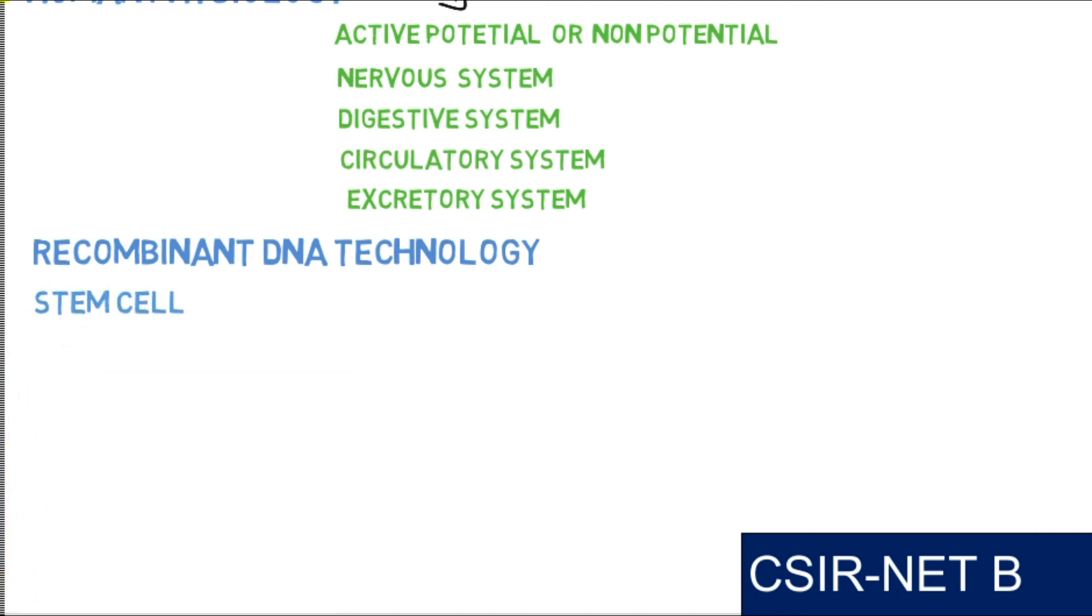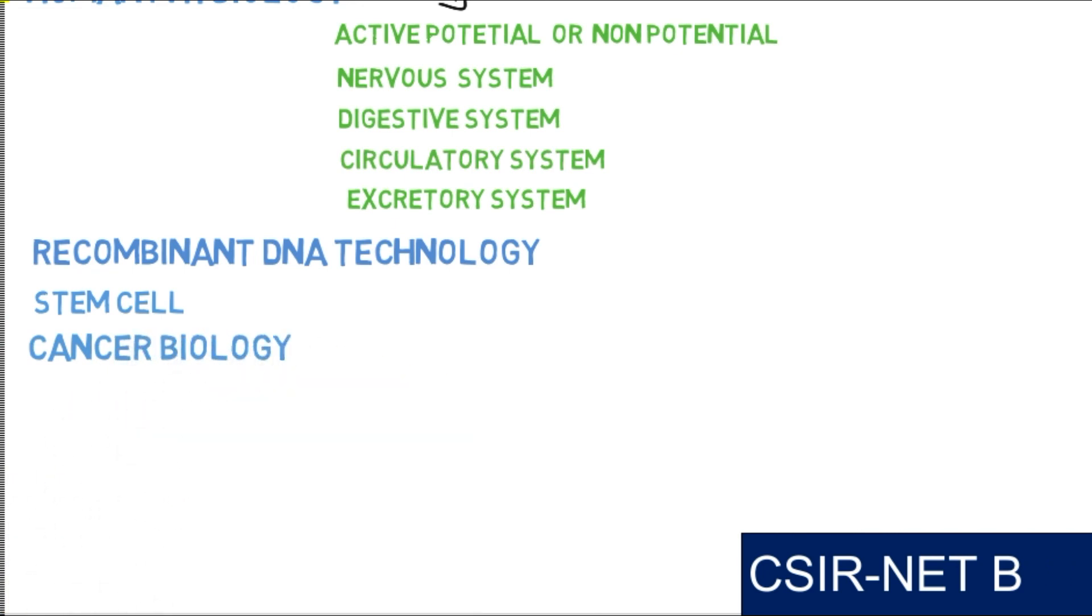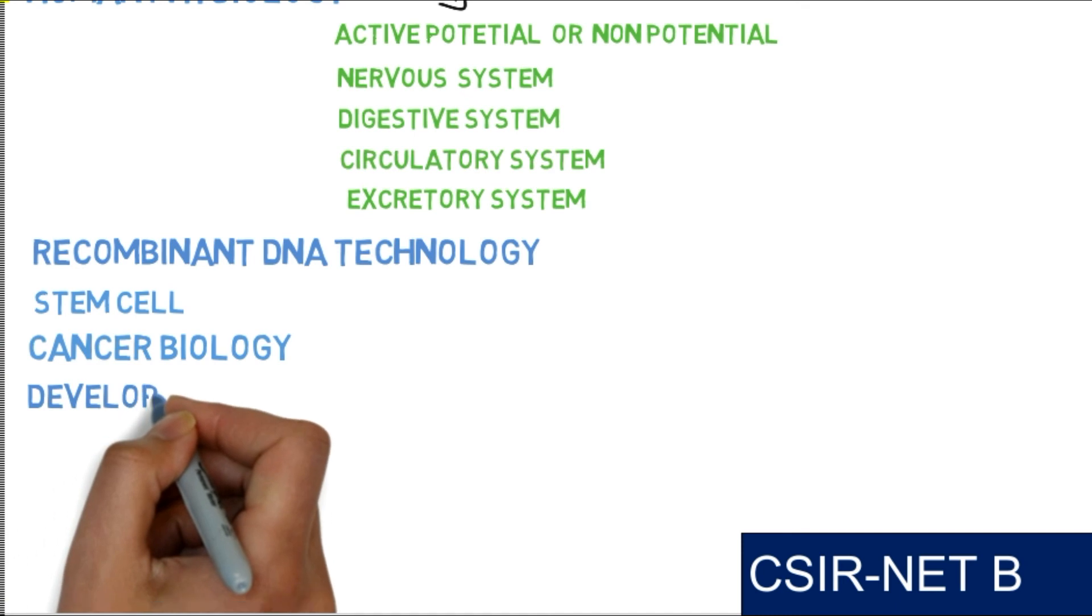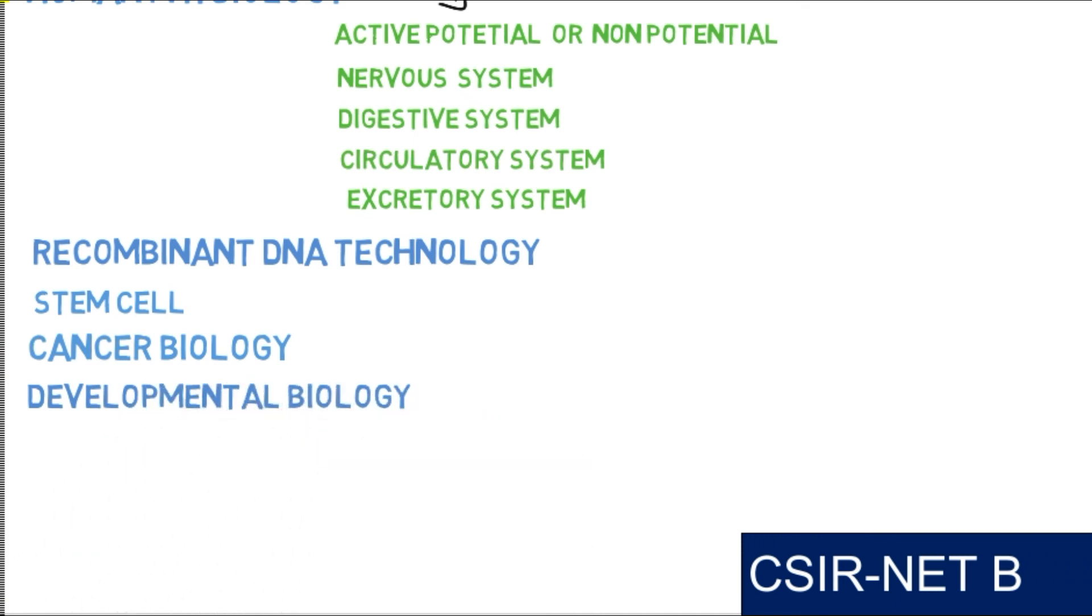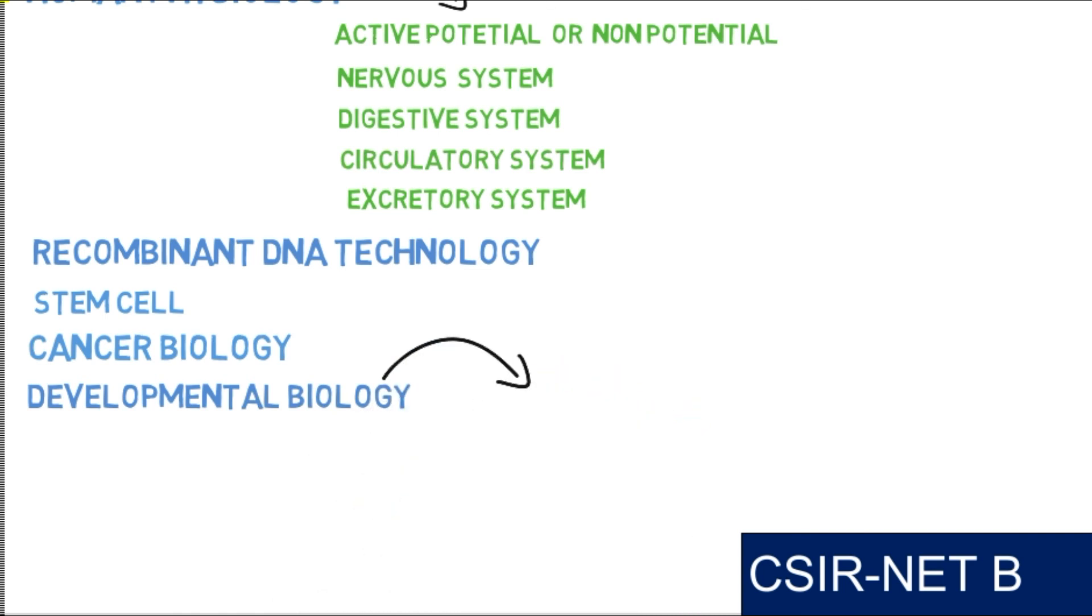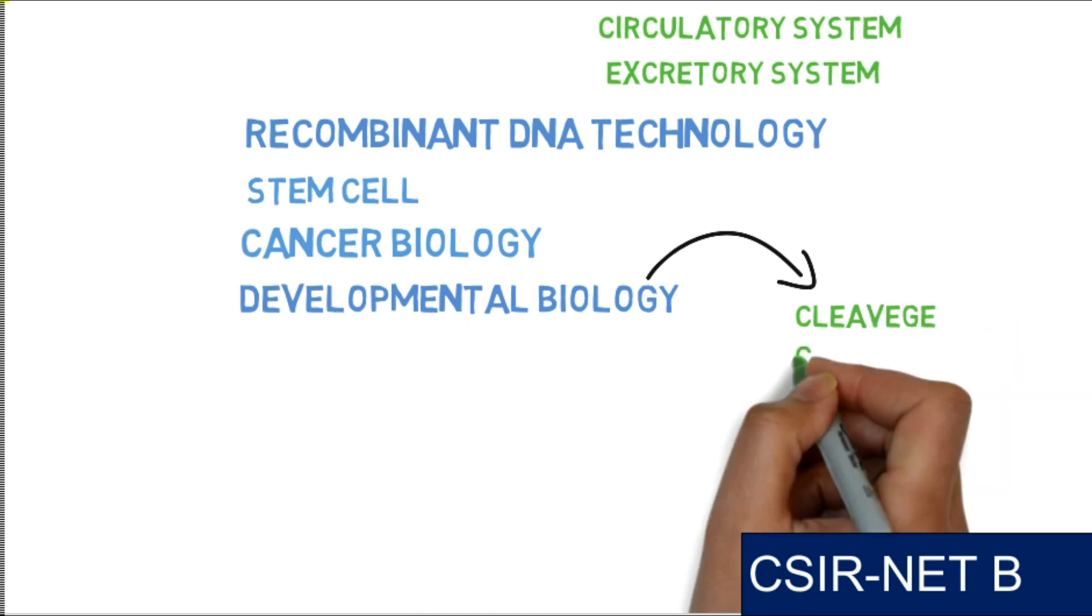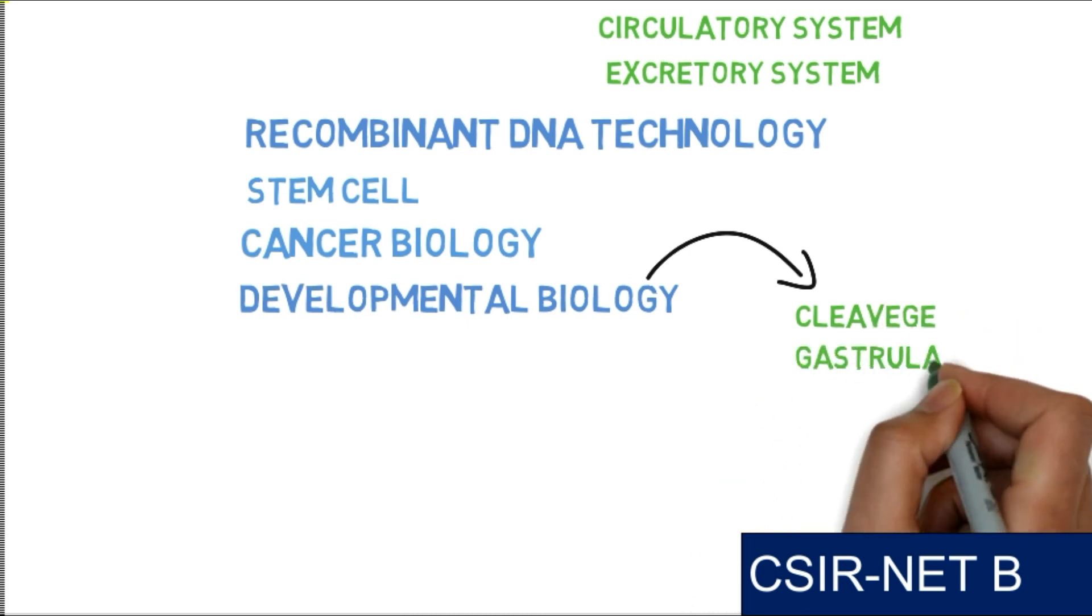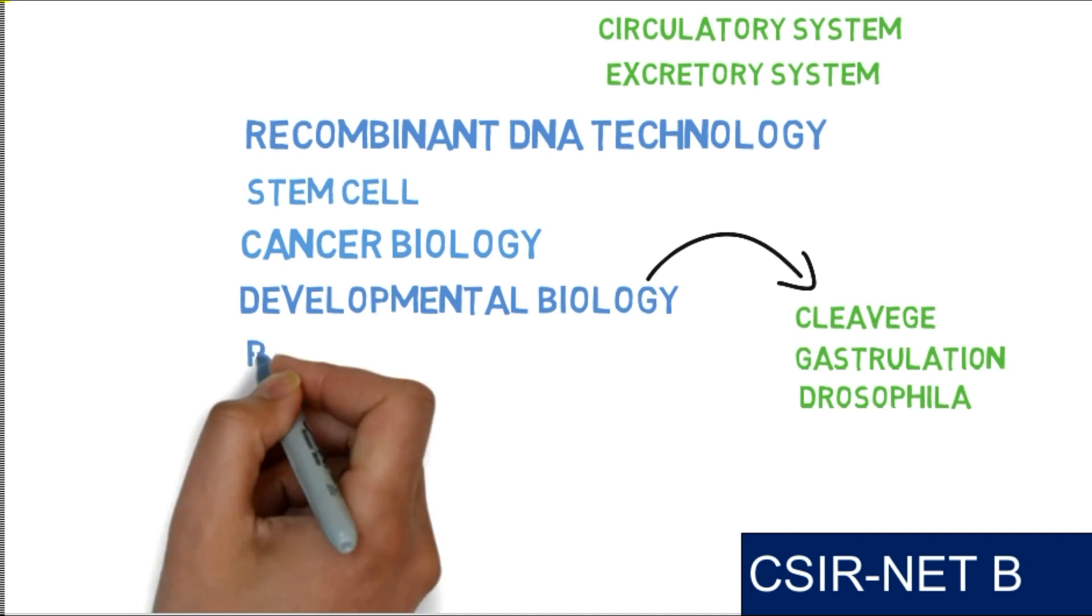Recombinant DNA technology is very important. Then you have to have some knowledge about stem cells, and you have to cover cancer biology as well as developmental biology. In developmental biology, some topics that are major include cleavage, gastrulation, and drosophila life cycle.